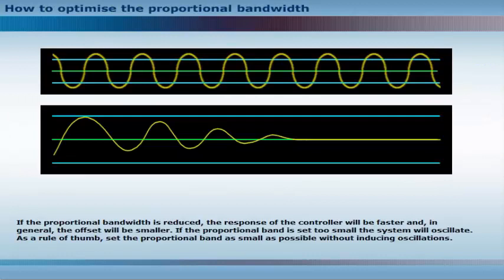If the proportional bandwidth is reduced, the response of the controller will be faster and, in general, the offset will be smaller. If the proportional band is set too small, the system will oscillate. As a rule of thumb, set the proportional band as small as possible without inducing oscillations.